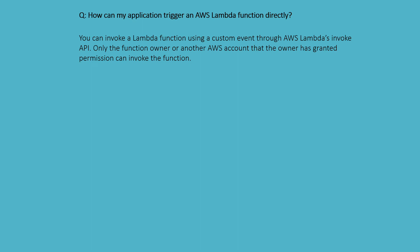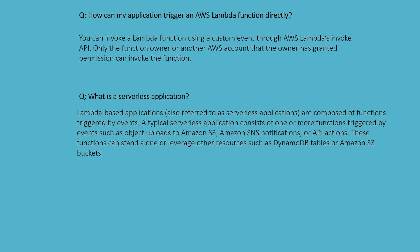How can my application trigger an AWS Lambda function directly? You can invoke a Lambda function using a custom event through the AWS Lambda Invoke API. Only the function owner and other AWS accounts that the owner has granted permission can invoke the function.